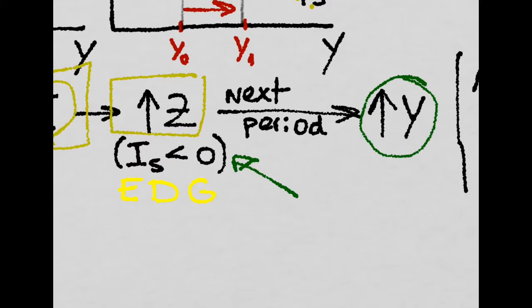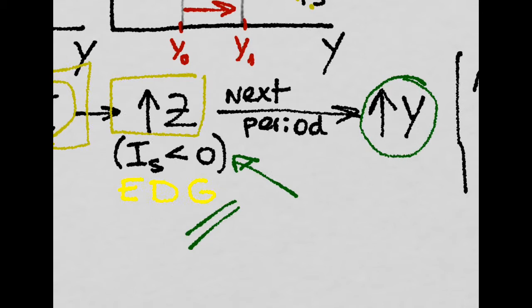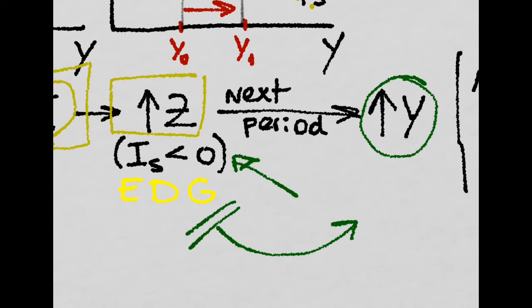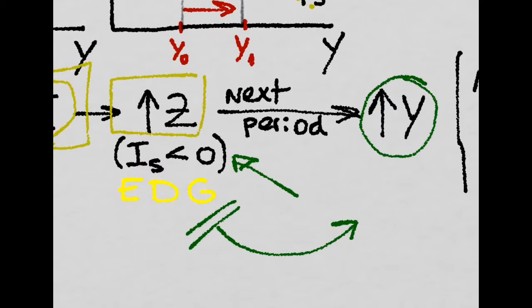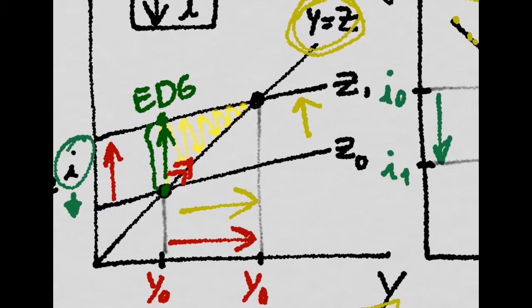So they know that what they produced in the previous period was not enough. So right now, in the next period, they will just produce more. So we move up here because we are producing more.